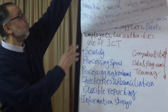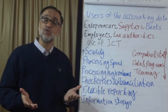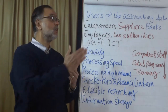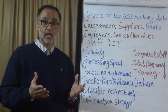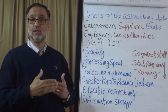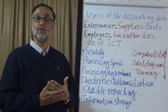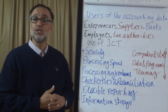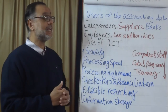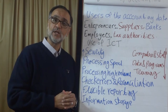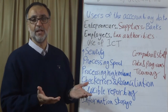Next, we talk about who uses accounting information. The basic users are the owners of the business, referred to here as entrepreneurs. Other users are suppliers, because most of the time organizations don't pay in cash for goods they receive — they pay on credit. In order for suppliers to decide to extend credit, they need information about the organization's economic activities. Banks are also users when the organization wants loans or overdrafts.